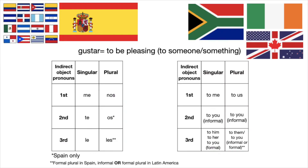So when you say something is pleasing in Spanish, you say 'it is pleasing to me,' 'it is pleasing to you,' and so on. In order to form those gustar phrases correctly, we need to use the indirect object pronoun, which translates into English as 'to me,' 'to you,' 'to him,' 'to her,' 'to us,' 'to you guys,' 'to them.'